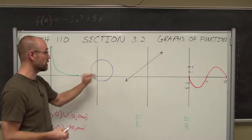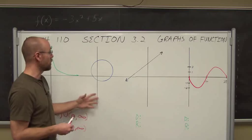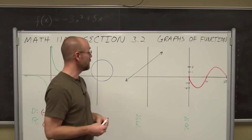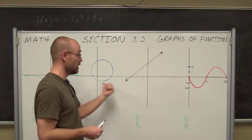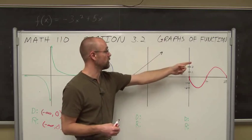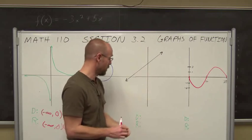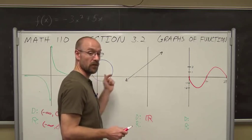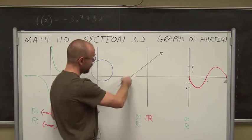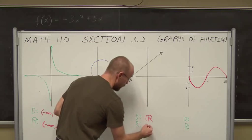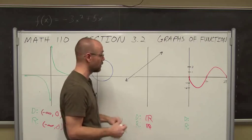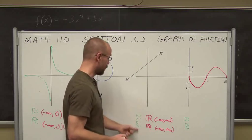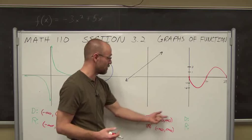We won't worry about domain or range for the circle since it isn't a function. For the linear graph, we know it's a linear equation because we see a straight line, continuing to negative infinity to the left and positive infinity to the right. So our domain — our possible x inputs — is all real numbers. Our range is also all real numbers. In interval notation, both domain and range are negative infinity to positive infinity.